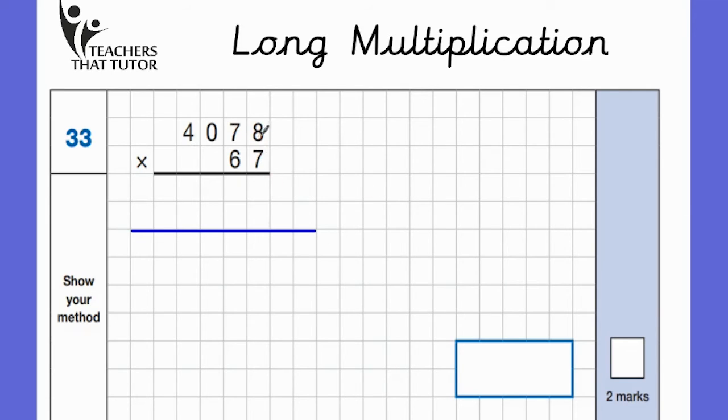So once again, multiplying starting with the ones. Eight times seven, 56, six down, carry the five. Seven sevens are 49 plus five is 54, so we're going to put the four down, I'm going to carry the five again. Then we've got zero times seven which is obviously zero, but we've got that five that we've just carried to put the five there. And then we've got four sevens are 28, so we're going to write both the two and the eight.